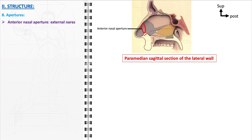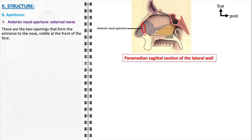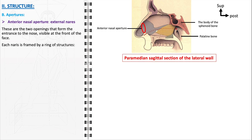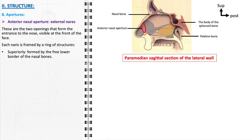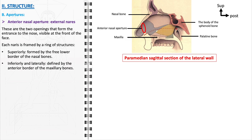The anterior nasal aperture, known as the external nares, are the two visible openings at the front of the face, forming the entrance to the nose. The structure of each naris is framed by a specific arrangement of bones: superiorly, it is formed by the free lower border of the nasal bones, which provide the upper framework. Inferiorly and laterally, the anterior border of the maxillary bones defines the lower and side boundaries. This configuration allows for the passage of air into the nasal cavity and plays a key role in breathing and olfaction.